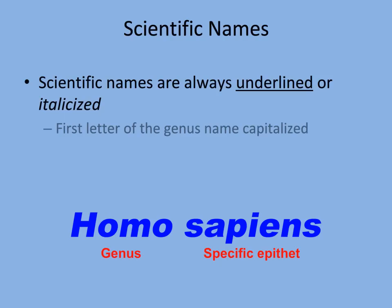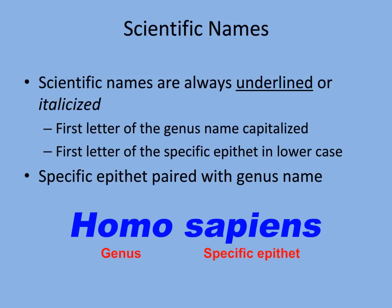Scientific names must be written in a certain way so that we know it is a species and not just some random Latin words. If we are typing it, we must italicize both the genus and the specific epithet. If we are writing it, we must underline both. The genus must be capitalized while the specific epithet is not. And they must be paired — if you just write sapiens, this is just a Latin word that means wise; you must pair it with its genus to indicate which species you are discussing.